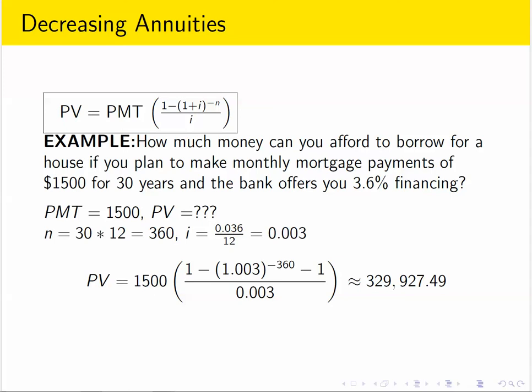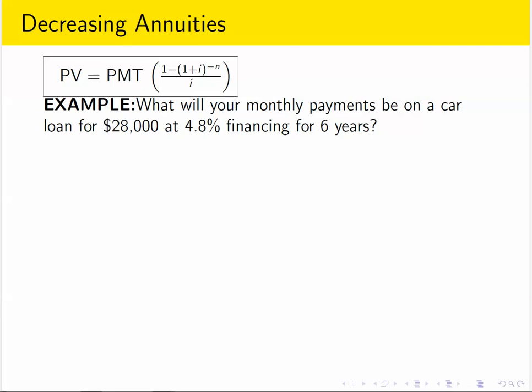So based on the parameters we've described, that's the largest loan we could afford with $1,500 monthly payments. Another loan-type question would be: if we know how much we're going to borrow, how much will we have to pay each month? Suppose we want to borrow $28,000 for a car loan at 4.8% financing, meaning 4.8% annual interest on a six-year car loan.